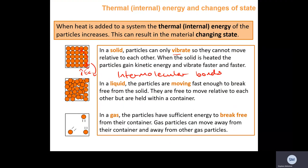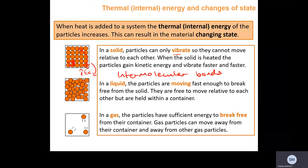Intermolecular bonds are the bonds between molecules that keep them fixed together in a solid. Gas particles have enough energy to break all the intermolecular bonds and expand to fill whatever volume is available — they can move away from each other and from the container. So the volume of the gas equals the volume of the container it is kept in. If this were a one metre cubed container, the volume of the gas would also be one metre cubed.